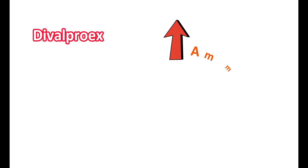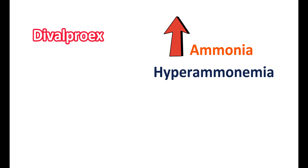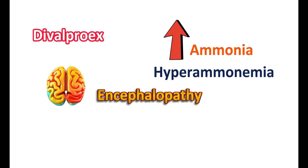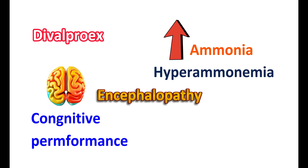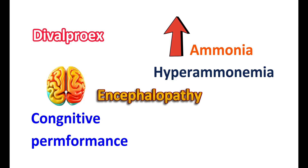Divalproex can increase ammonia levels in the blood, a condition called hyperammonemia. If ammonia levels are excessively elevated, it can produce encephalopathy, resulting in brain dysfunction and reduced cognitive performance. This is a highly serious condition. Symptoms may include abnormal lethargy, lack of energy, and excessive vomiting along with changes in mental status. In such conditions, ammonia levels should be immediately monitored, and if hyperammonemia is confirmed, this medication should be immediately discontinued.